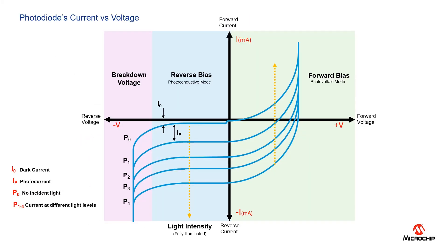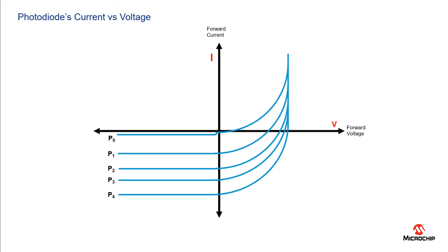To better understand the working modes of the photodiode we must consider the current versus voltage characteristics. The chart shown on the screen consists of four areas called quadrants. This graph shows what happens when an external voltage is applied across the photodiode. For example, when the voltage is positive the current increases exponentially.